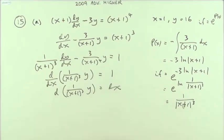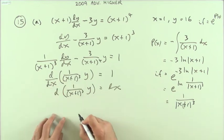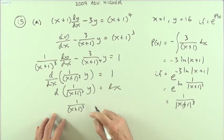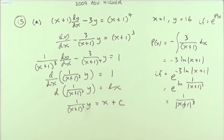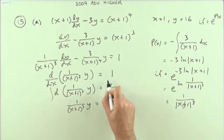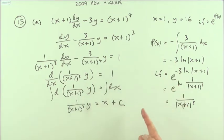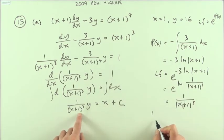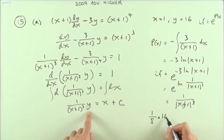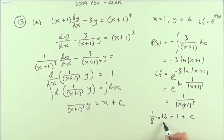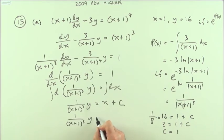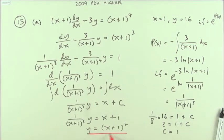Integrating both sides: the left side goes back to 1/(x+1)^3 times y, since that was its own differential, and the right side just goes to x + c. So 1/(x+1)^3 · y = x + c. Now applying initial conditions — when x=1, y=16 — that gives 1/8 · 16 = 1 + c, so 2 = 1 + c, meaning c = 1. Therefore the solution is y = (x+1)^4.